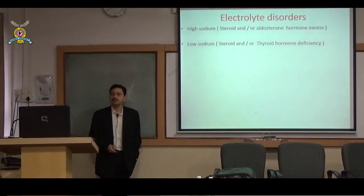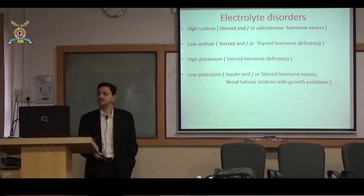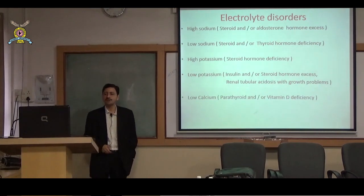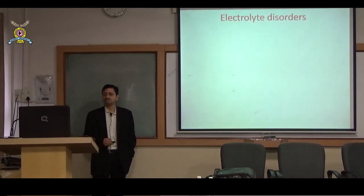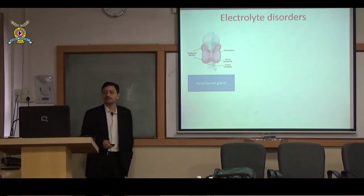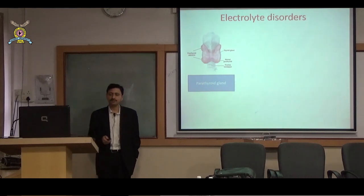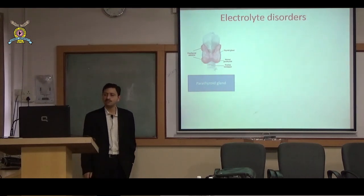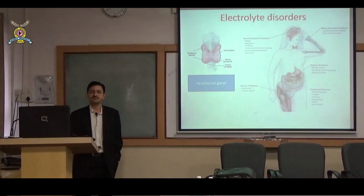Coming to electrolyte disorders: high sodium can be due to steroid or aldosterone excess; low sodium due to steroid/hormone deficiency; high potassium due to steroid hormone deficiency; low potassium due to insulin or steroid hormone excess; low calcium is related to parathyroid and vitamin D; high calcium to parathyroid hormone excess and vitamin D. I want to stress the parathyroid gland — four tiny glands behind the thyroid that secrete parathyroid hormone (PTH) maintaining calcium homeostasis — because we had a relevant case in this very hospital.